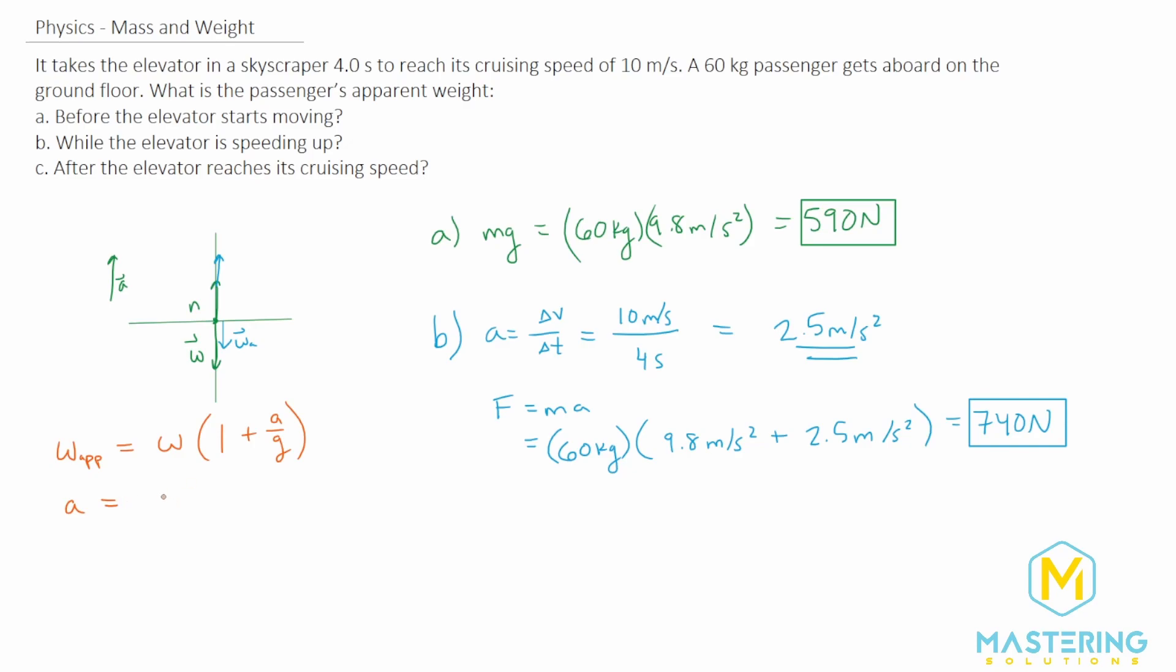If we were given all of the weights and the apparent weight and we wanted to find what the acceleration was, which that kind of question showed up on my test, we'd have the w app or apparent weight divided by the actual weight, then subtract that from 1 and multiply that by g. It's the exact same formula, just rearranged for acceleration.